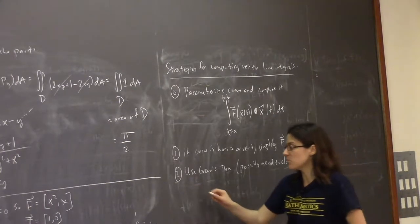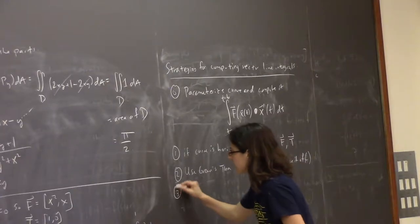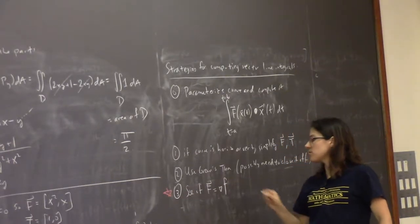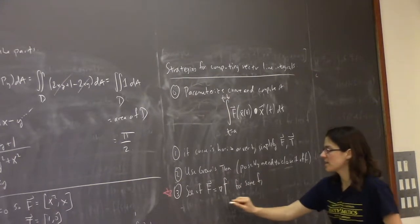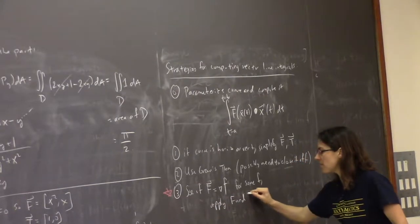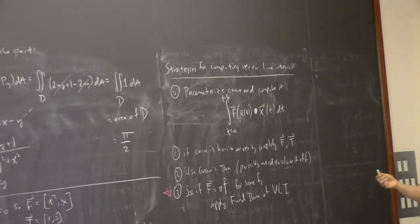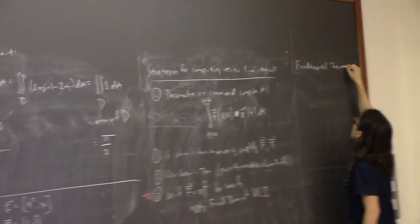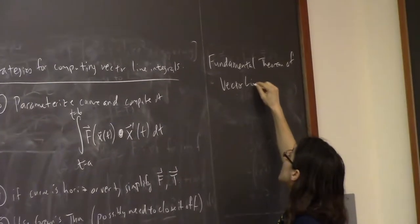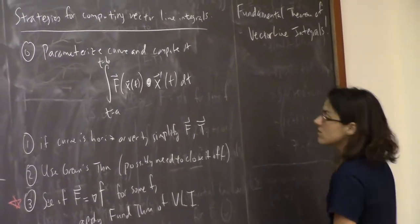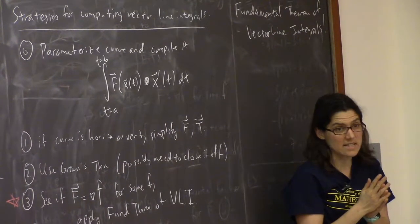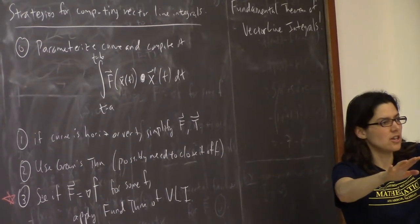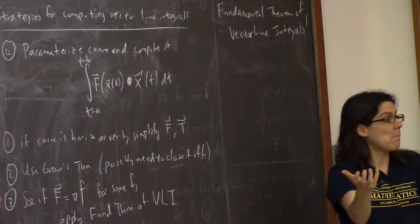A new option is to see if your vector field is actually the gradient vector field for some function f, and apply the fundamental theorem of vector line integrals. The fundamental theorem of calculus says: want to know something about a function on an interval? Take the anti-derivative, plug it in at the end, and subtract off what it was at the beginning.